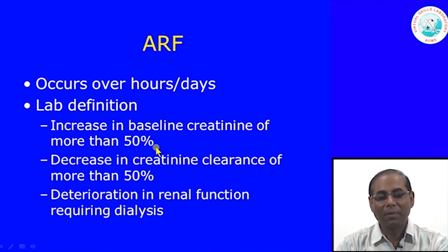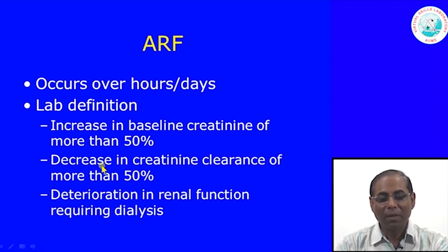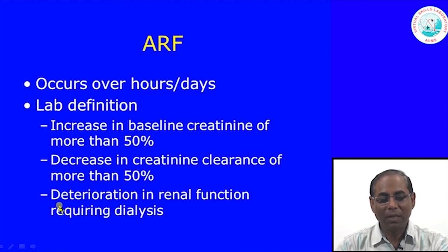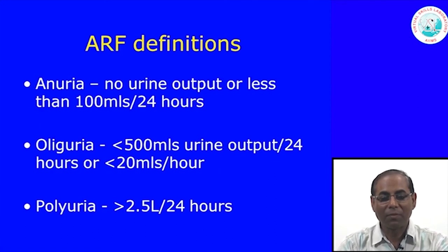We can diagnose it pathologically as an increase in baseline creatinine of more than 50 percent. For example, if a person's baseline creatinine is 1.2 mg% and within 2 days it becomes 2.4 mg%, that is definitely acute renal failure. A decrease in creatinine clearance of more than 50 percent is related to a decrease in glomerular filtration rate, and deterioration of renal function may require dialysis.